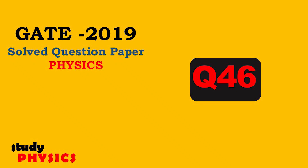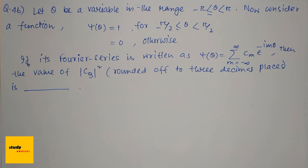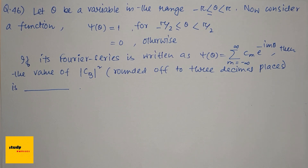Hi everyone, welcome to Study Physics. Here's question number 46. Let θ be a variable in the range −π ≤ θ < π. Consider a function ψ(θ) equal to 1 for −π/2 ≤ θ < π/2, and 0 otherwise. If its Fourier series is written as ψ(θ) = Σ (m = −∞ to ∞) c_m · e^(−imθ), then find the value of |c₃|².